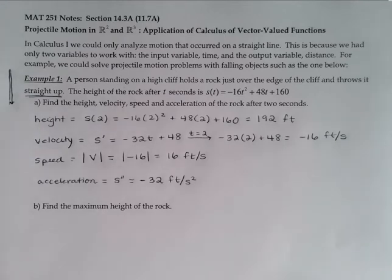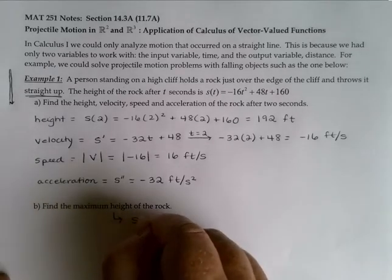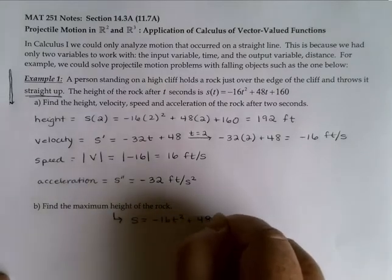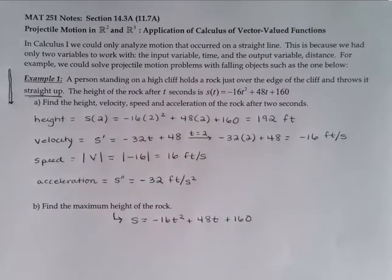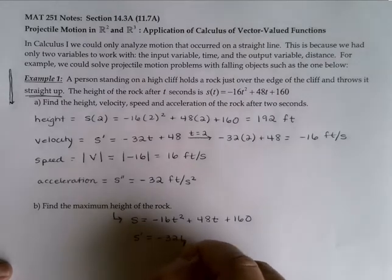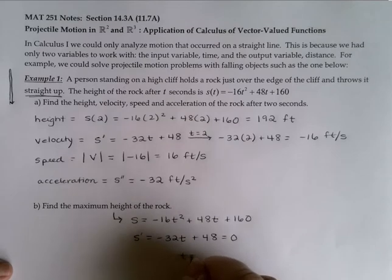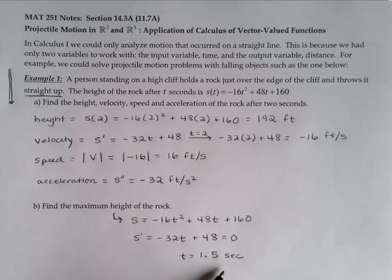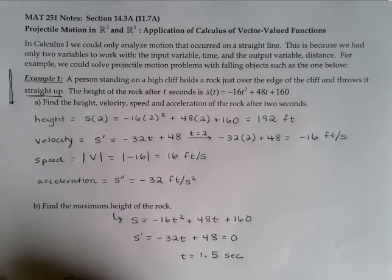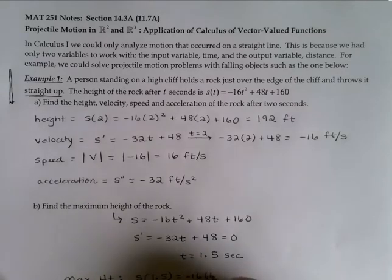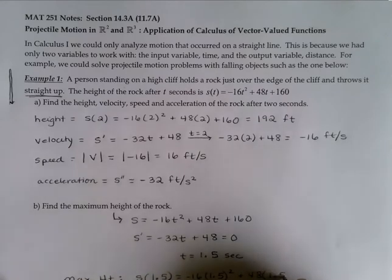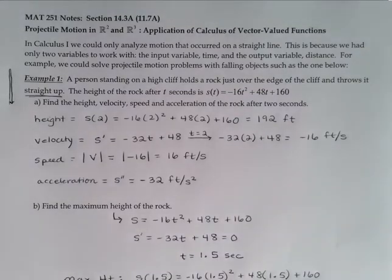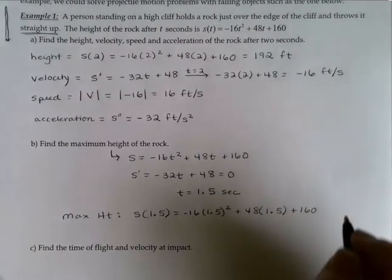Part B — we'd like to find the maximum height of the rock. The height function was negative 16t squared plus 48t plus 160. You can always find the maximum or minimum of a function using calculus by taking the derivative and setting it equal to zero. It looks like t in this case is going to be 1.5. That's the time it takes the rock to reach maximum height. To get the actual maximum height, I'll plug that back in: s of 1.5 gives me 196.